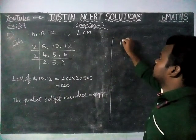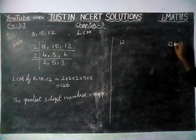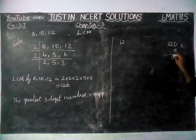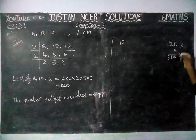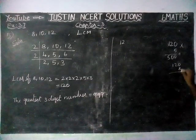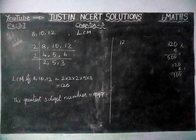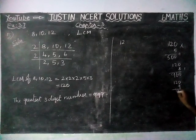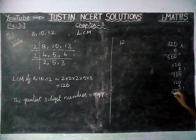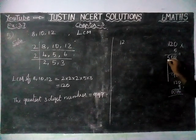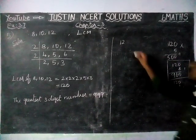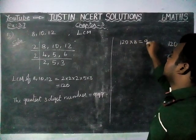Now we are going to find the multiples of 120 using a trial and error method. 120 into 5 is 600. Checking 120 into 8: 8 twos are 16, remaining 1, one 8 is 8 plus 1 is 9, so 120 × 8 = 960. Checking 120 into 9: 9 twos are 18, remaining 1, one 9 is 9, so 120 × 9 = 1080 — that is a 4-digit number. So the possible answer is 120 × 8 = 960.